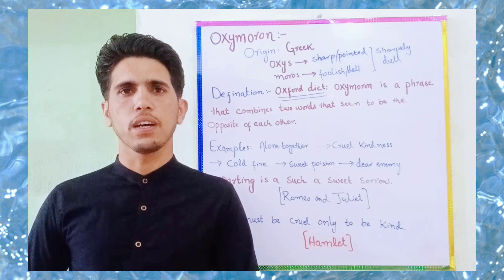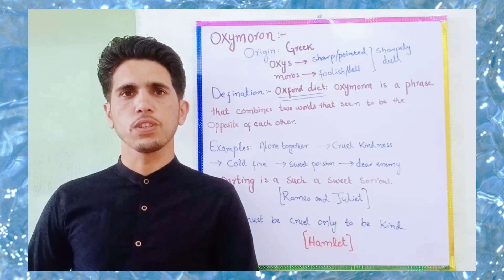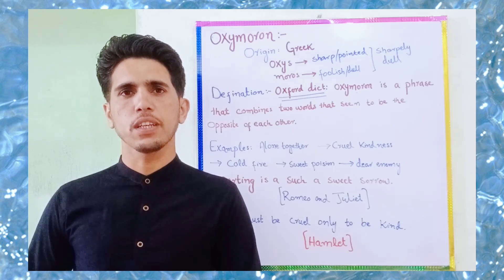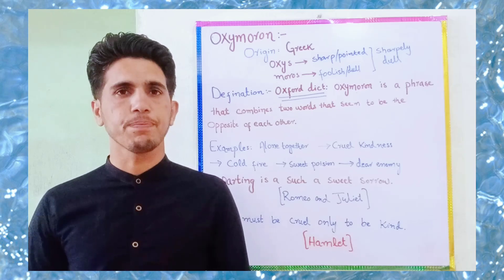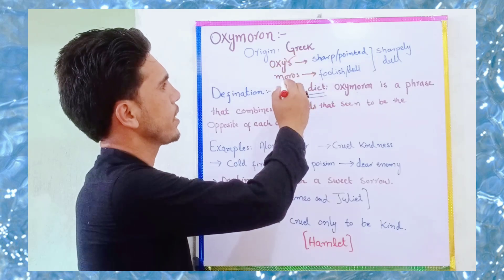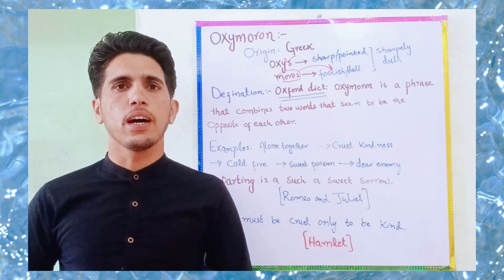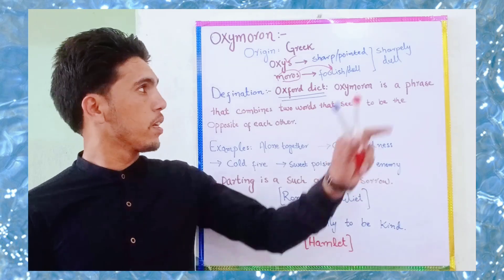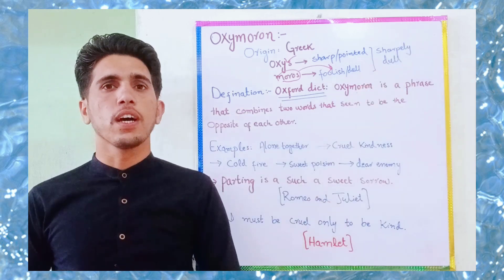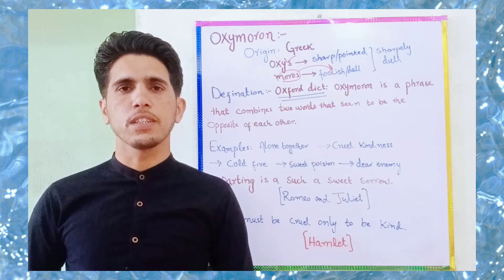Firstly, looking at the history of oxymoron — as many literary terms have got their origin in Greek and Latin words, oxymoron has got its origin in two Greek words: oxys and moros. It is the combination of these two Greek words. Oxys means sharp or pointed, and moros means foolish or dull. Together these two words make the literary device oxymoron, which literally means sharply done.